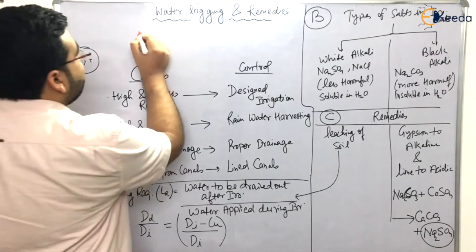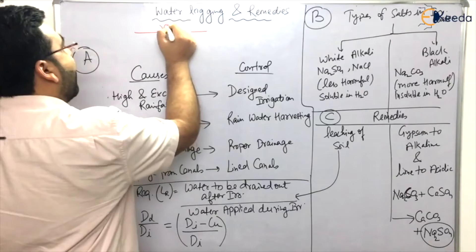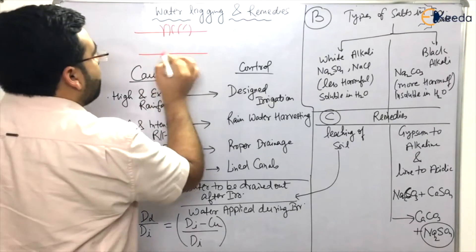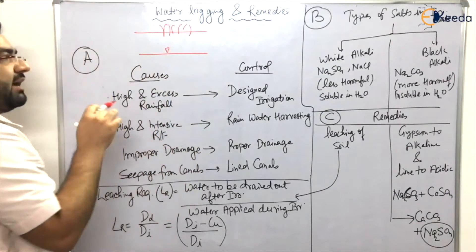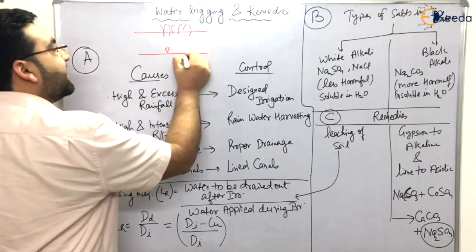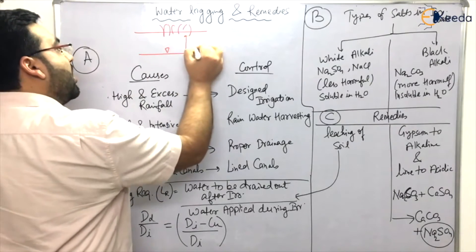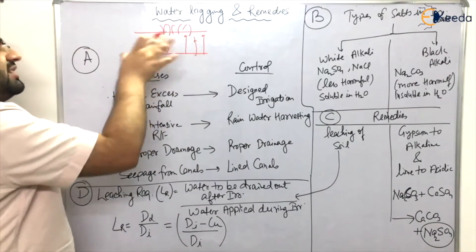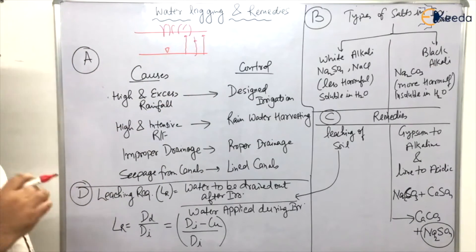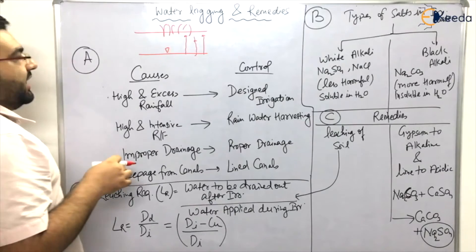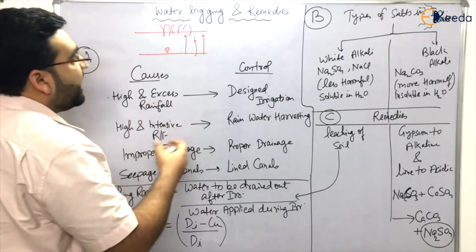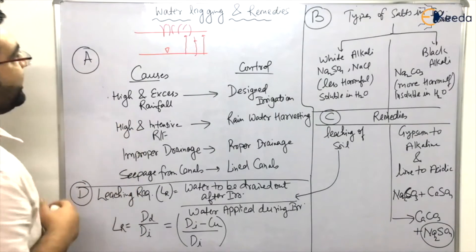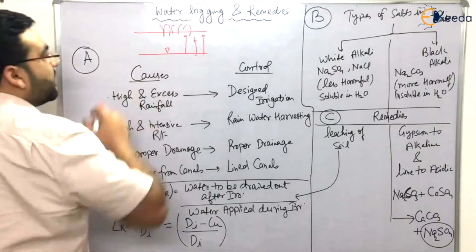Let us say this is your soil and above the soil you have crops. There is a groundwater table, and sometimes due to certain reasons this groundwater table can rise and the water reaches the surface of the earth. When this happens, the fertility of the soil decreases and the germination capacity of the soil decreases — that is known as water logging.